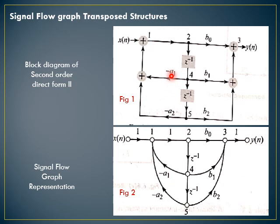Give the same directions: -a1, -a2, -b1, -b2. This is b0, this is 1, with x(n) input and y(n) output. This is how we draw the signal flow graph from the direct form 2 block diagram.